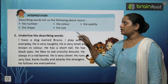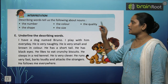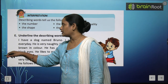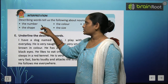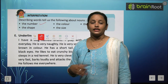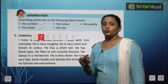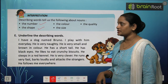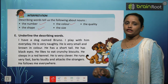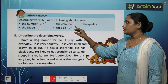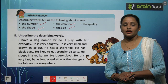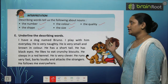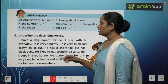Next is: describing words tell us the following about noun. Describing words hame noun ke baare mein kya bataate hai? Noun ka number bataate hai — kitne noun hai. Shape bataate hai — noun kis shape ka hai: circular hai, square hai? Color bataate hai — red, green, yellow, blue. Size bataate hai — big hai, small hai? Quality bataate hai — quality kaisi hai?